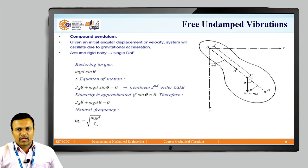From this, if you write down the equation of motion, it will be J0 theta double dot plus mg d sin theta which is equal to 0, and this is a non-linear second order ordinary differential equation.